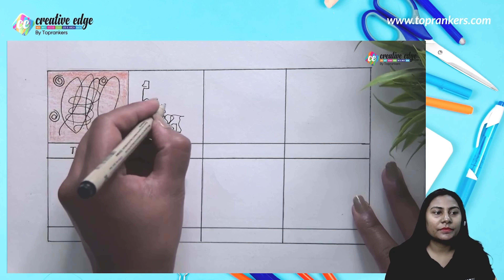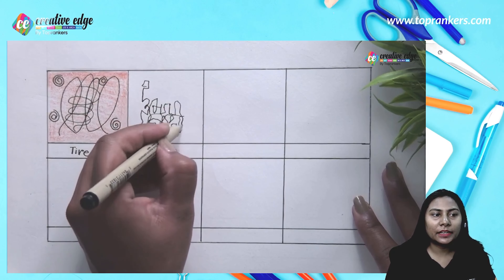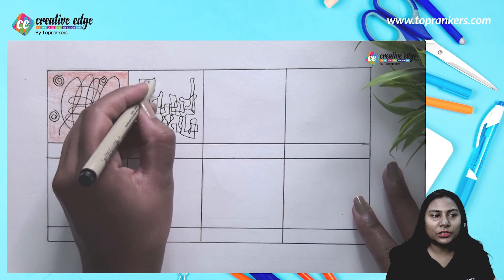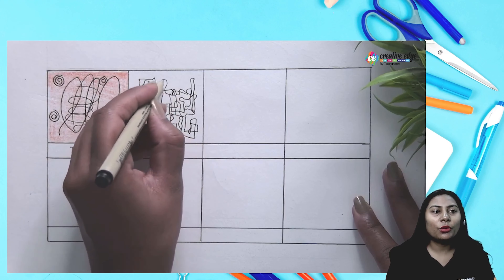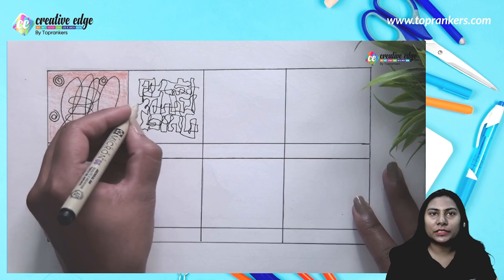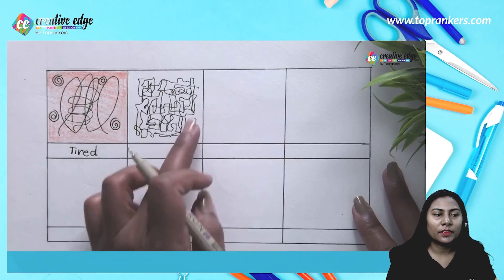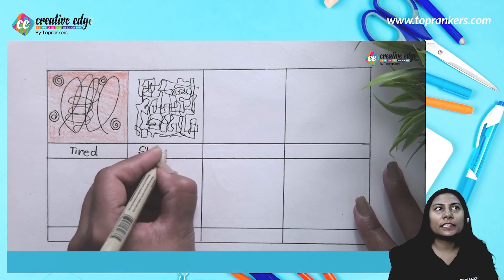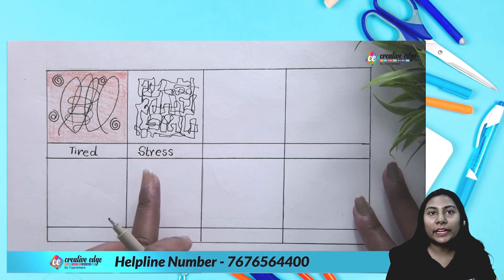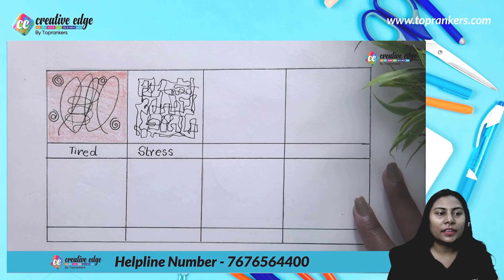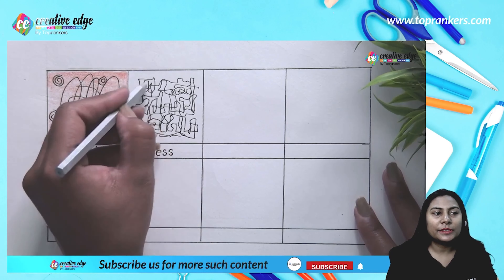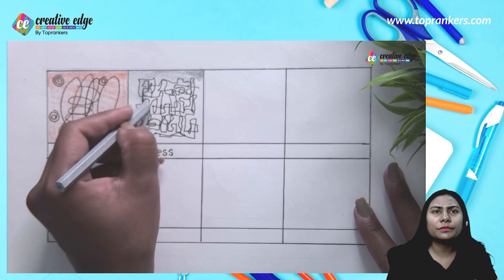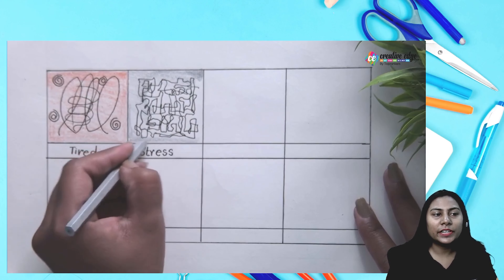Next, we come to another emotion. The texture you are seeing has very rough and rigid lines, and the other lines are heavily overlapping. The overall texture has a negative feel. So this texture represents stress. We will depict stress through grey color — not dark black, but grey color for stress.